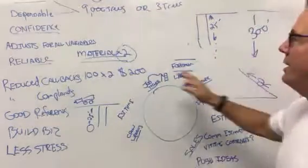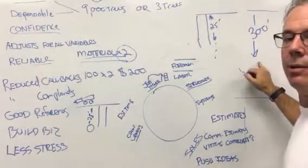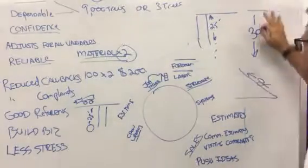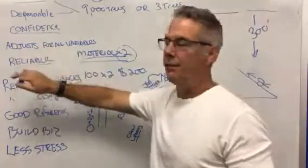So what I mean by adjusting for variables is you would figure in a little more labor per hour per tree in this scenario than you would for this one. That makes sense. So that's what I mean by adjusting for variables.